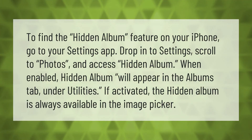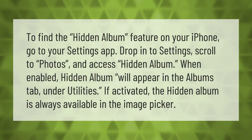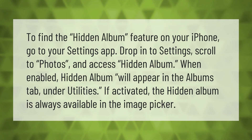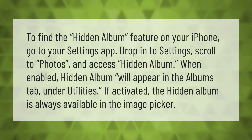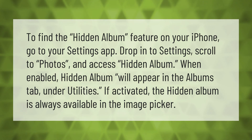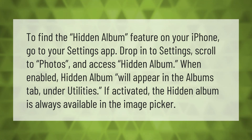To find the hidden album feature on your iPhone, go to your Settings app, scroll to Photos, and access the Hidden Album. When enabled, the hidden album will appear in the Albums tab under Utilities.